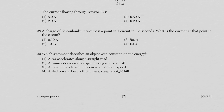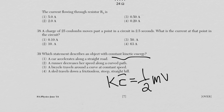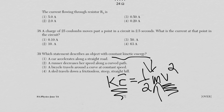Question 39: which object has constant kinetic energy? KE = ½mv². For KE to be constant, speed must be constant. A car accelerating changes speed; a runner slowing changes speed; a sled going downhill gains speed. Only choice three — constant speed — gives constant kinetic energy.